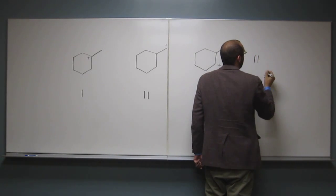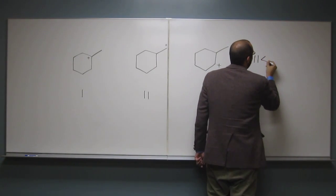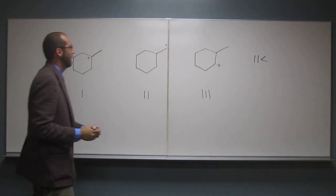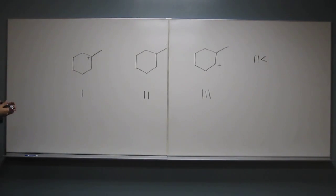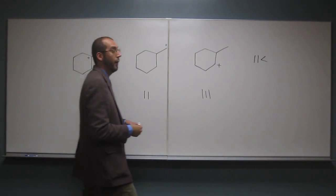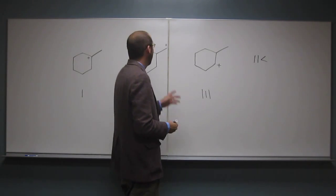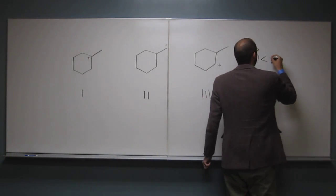So we'll say two is less stable than, what's the next? Three. Most stable. Okay, three. Why is that? Because it's a secondary. Secondary, and secondaries are more stable than primaries, of course.